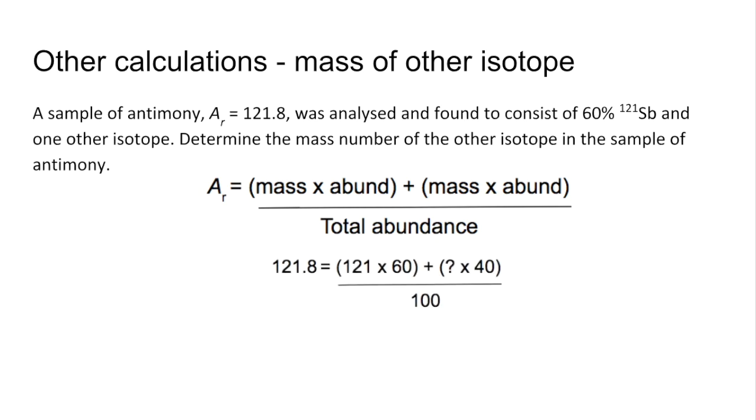So the numbers go in this time like that. So we've got the relative atomic mass already. We know it's 60% of 121. The other isotope's got to be 40%, but we don't know its mass. So I'm using a question mark there. So that rearranges to that. Question mark comes out of 123.